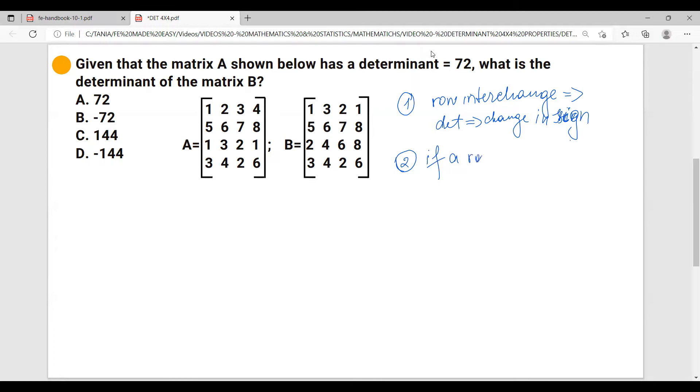So if a row or column is multiplied by a factor, this results that the determinant will be multiplied by that factor.